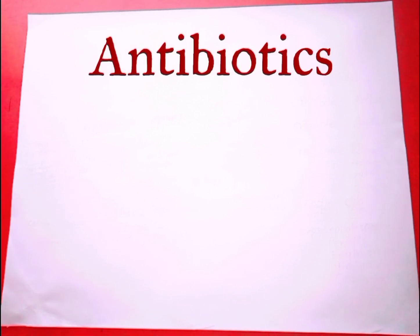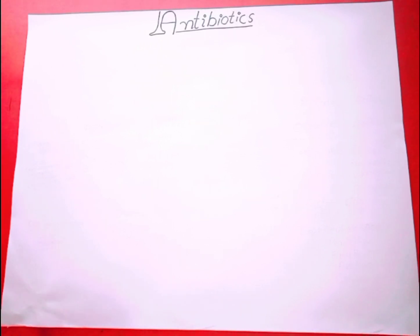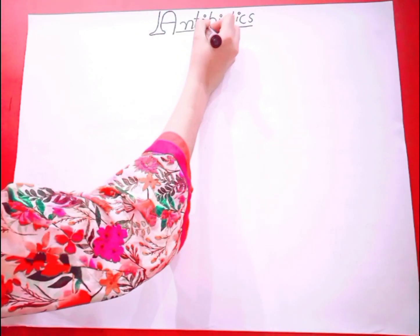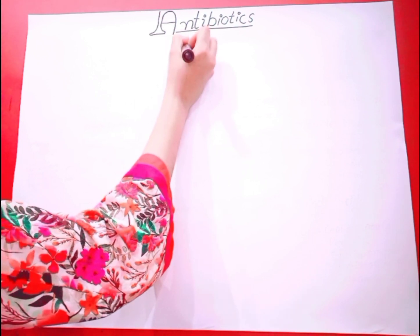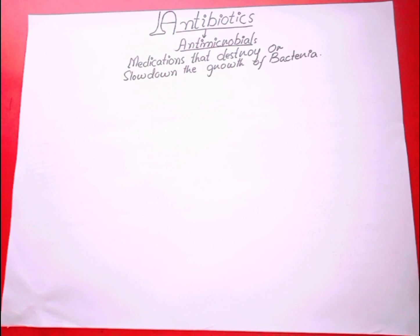Hello friends, welcome to Learn Science with Me. Today I am going to talk about antibiotics — their definition and the criteria through which we can classify them. Antibiotics are the medications that destroy or slow down the growth of bacteria, which is a microorganism. These antibiotics are also called antimicrobials.